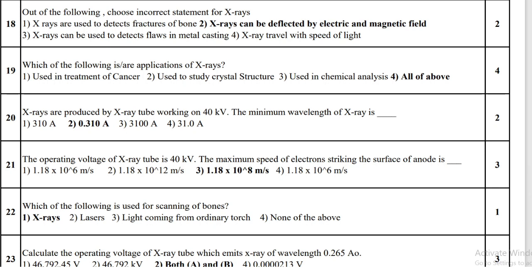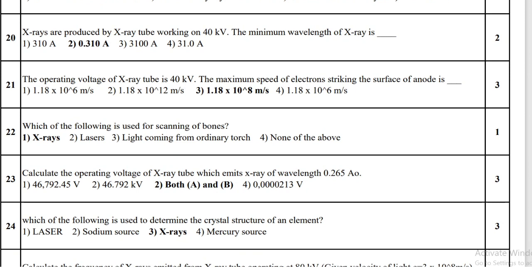X-rays are used for scanning of bones. Calculate the operating voltage of an x-ray tube which emits x-rays of wavelength 0.265 angstrom; the operating voltage is 46792.45 volt.